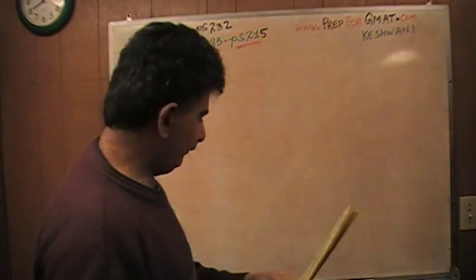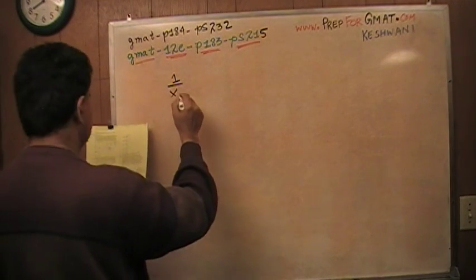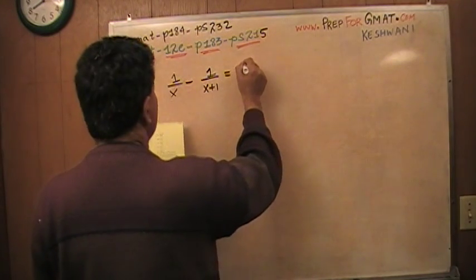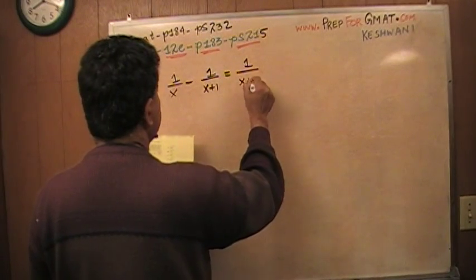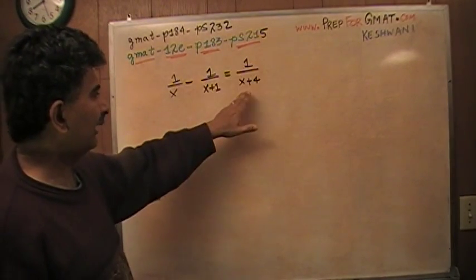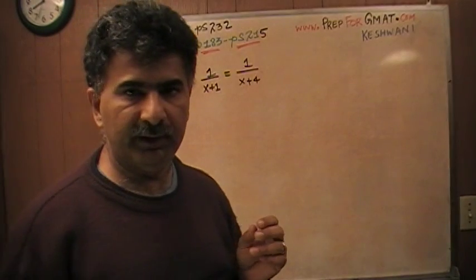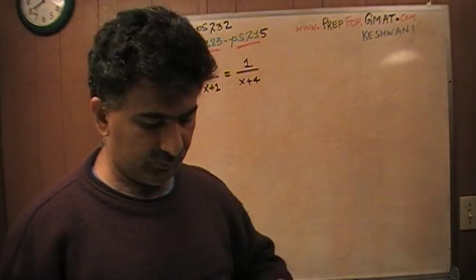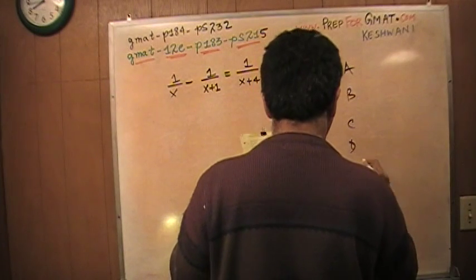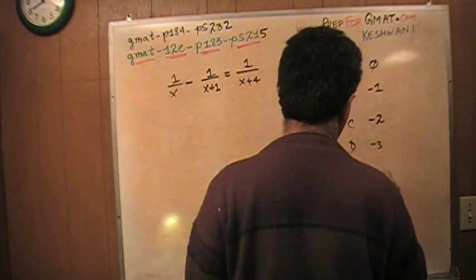It says: if 1 over x minus 1 over (x + 1) equals 1 over (x + 4), then the question simply is, what could be the value of x? The keyword here is 'what could be the value' — they're not saying what must be the value. They're simply asking what could be the value. They give you answer choices: 0, negative 1, negative 2, negative 3, and negative 4.